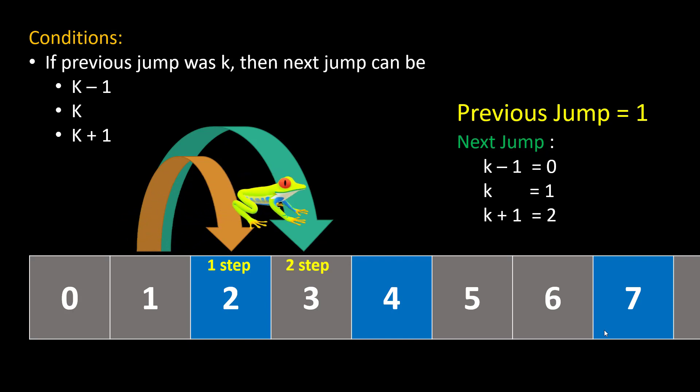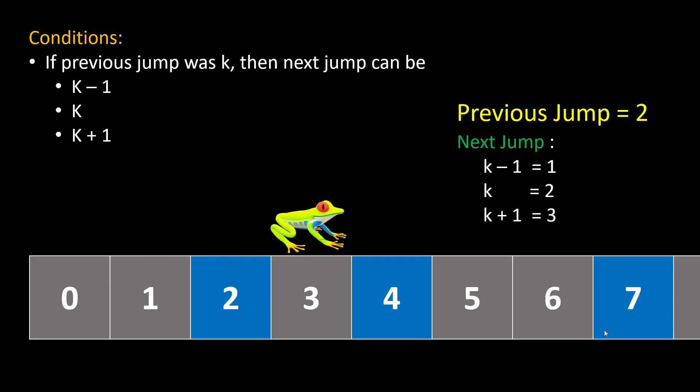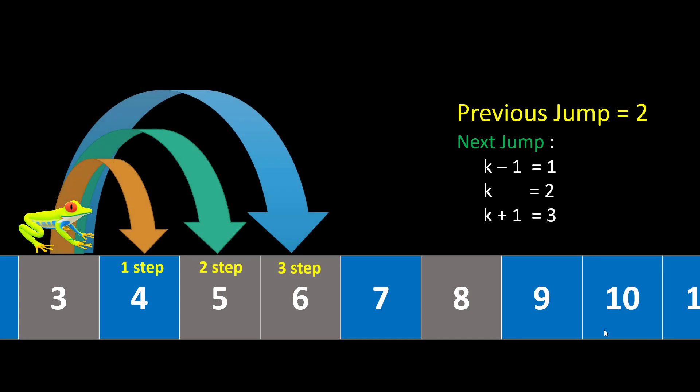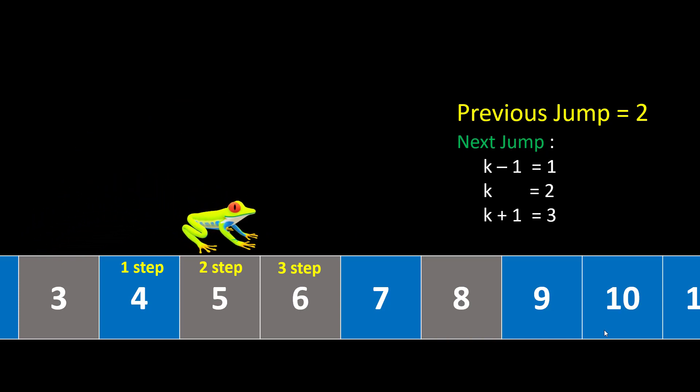We will jump 2 units and land on another stone. When we reach index 3, the previous jump becomes 2. So the next jump we can take from index 3 can be either 1, 2, or 3. Taking one step will land us at index 4 which is a water position — we cannot go there. The other 2 options land us on 2 different stones. Here we are taking 2 steps, landing at stone index 5. We will continue to jump from one stone to the other and see if we are able to reach the last stone.